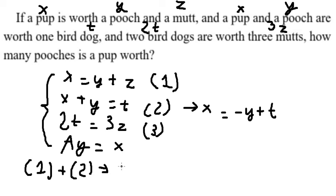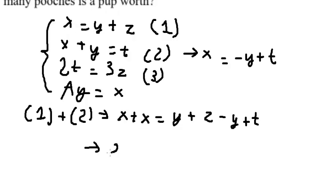So equation number one plus equation number two. We have x plus x equals to y plus z minus y plus t, so this one we have 2x equals to z plus t.